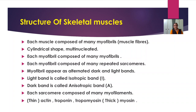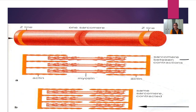Myofibrils appear as alternate dark and light bands. The light band is called the isotropic band, also called the I-band. The dark band is called the anisotropic band, or A-band. Each sarcomere is composed of many myofilaments, showing two types of filaments: thin filaments and thick filaments. Thin filaments consist of actin, troponin, and tropomyosin; thick filaments show the presence of myosin protein.